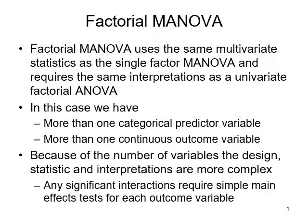Now if we have multiple IVs we're not only going to have those main effects to look at, we're going to have every possible interaction to examine as well. So with those interactions we're looking at simple main effects. In this case we have more than one categorical predictor variable and more than one continuous outcome variable — that's why we're doing MANOVA.